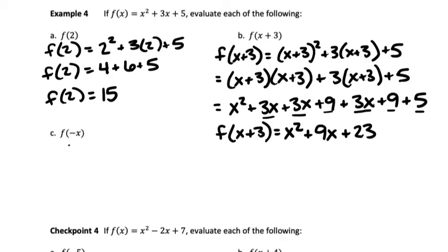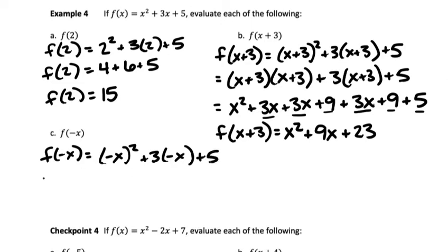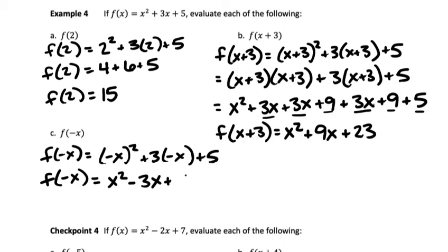For part C, I'm plugging in negative x. I need to think about what happens with negative numbers. If I have a negative number and I square it, it becomes positive — so negative x times negative x is the same as x squared. Then I have plus 3 times negative x, which simplifies to minus 3x, and then just plus 5. Because I was plugging in something with a variable, my answer has that same variable in it.